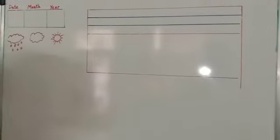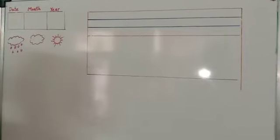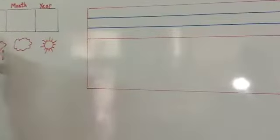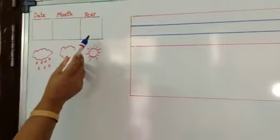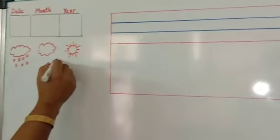So before starting with the writing pattern, first write the date, month and the year followed by the weather description.